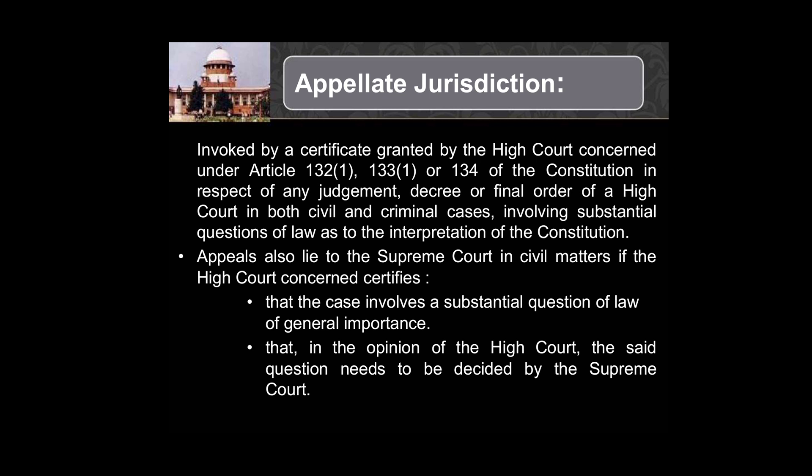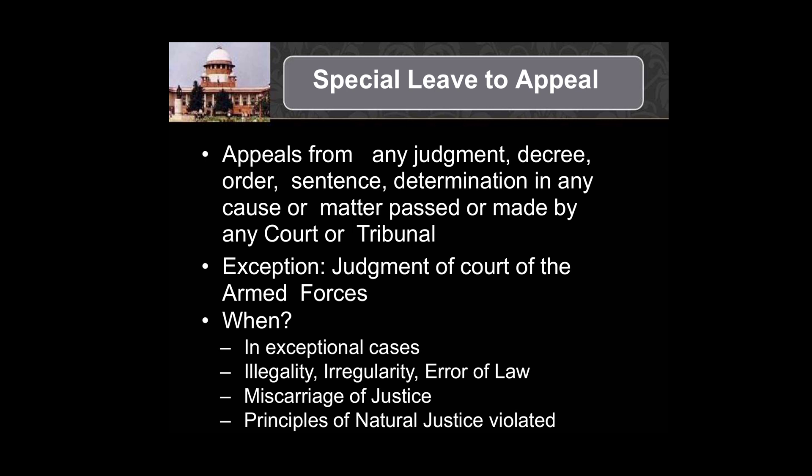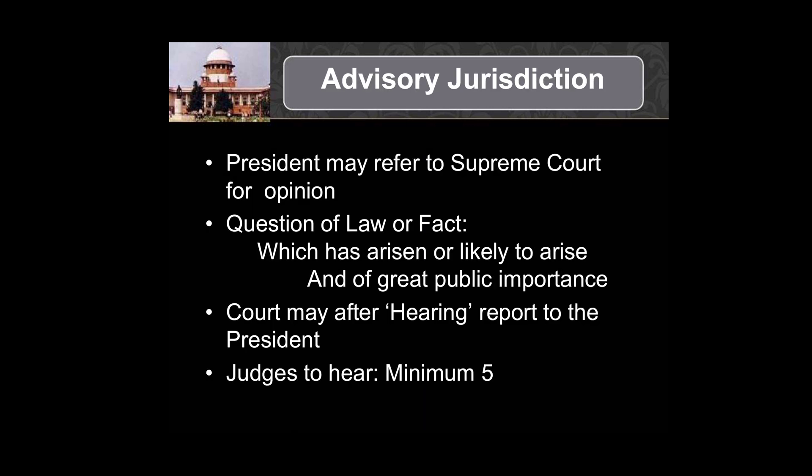Appellate jurisdiction covers all cases of appeal from the High Courts to the Supreme Court. A court of appeal may change a decision or reduce a sentence passed by the lower courts. The Supreme Court is the final court of appeal and has powers to grant special leave to appeal against the judgment delivered by any court in the country. Appeals to the Supreme Court can be made in three kinds of cases: constitutional cases, civil cases, and criminal cases.